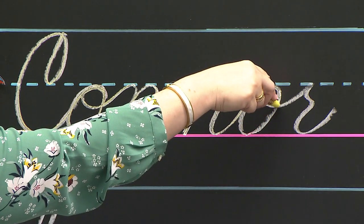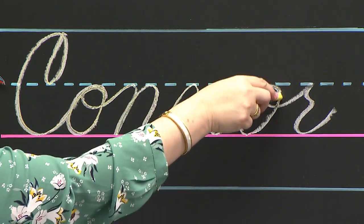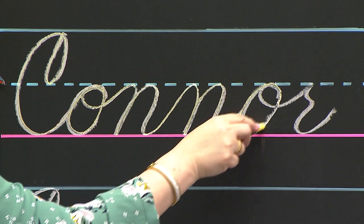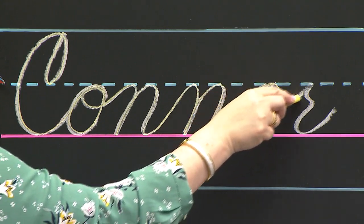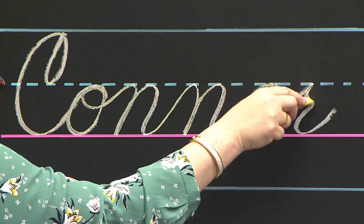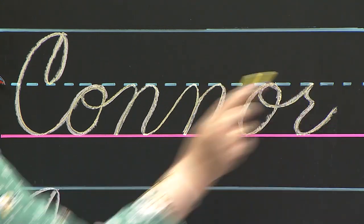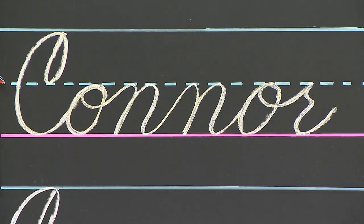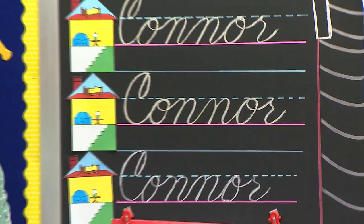Did I go all the way back down to the pink carpet yet? No. I curve back around, go through, go up, stick out, come down, and smile. And I flowed all the way through to the end.